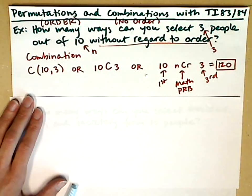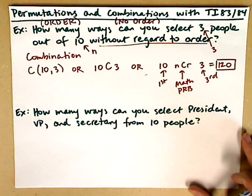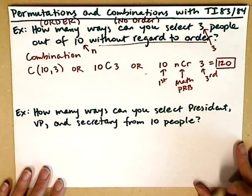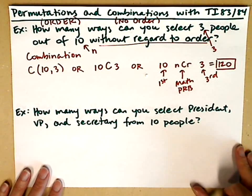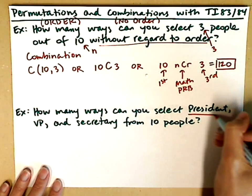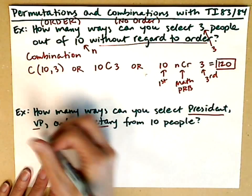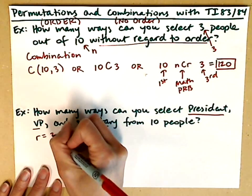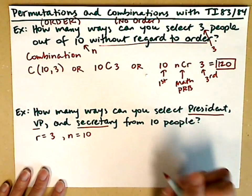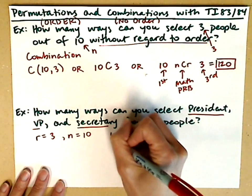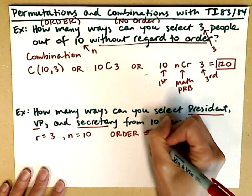Let's look at the second example. We're asked how many ways can you select a president, a vice president, and a secretary from 10 people? In this case, we're selecting 3 people, but it's 3 specific titles. So we do have an R value of 3. Our N value is still 10, but because we have specific titles, order does matter, and we're looking at a permutation or an ordering.